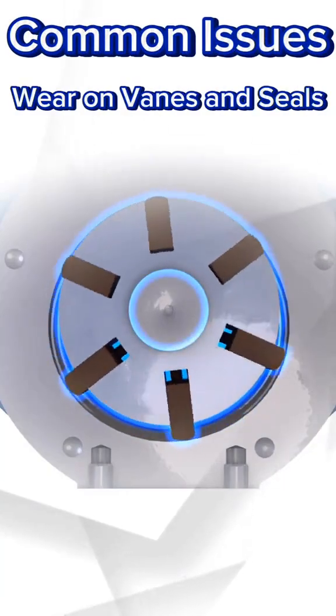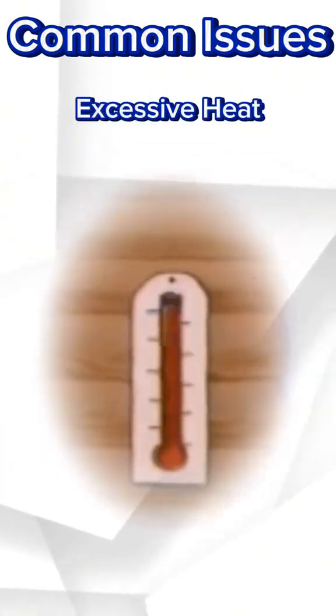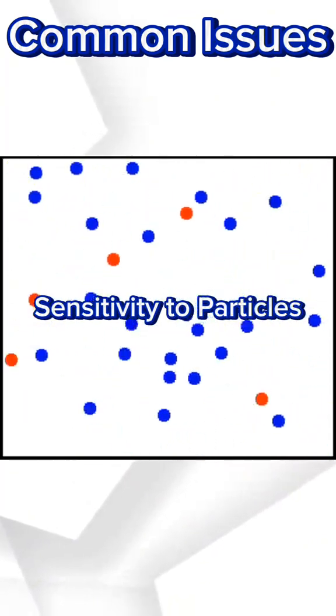Common issues: 1. Wear on vanes and seals. Friction causes wear, impacting efficiency and causing leaks. 2. Excessive heat. Constant friction generates heat, which can reduce pump lifespan and performance. 3. Sensitivity to particles. Particulates in fluid may damage vanes or clog the pump.